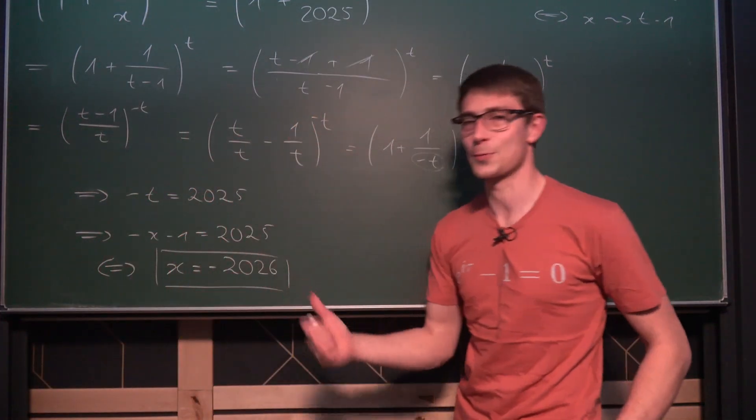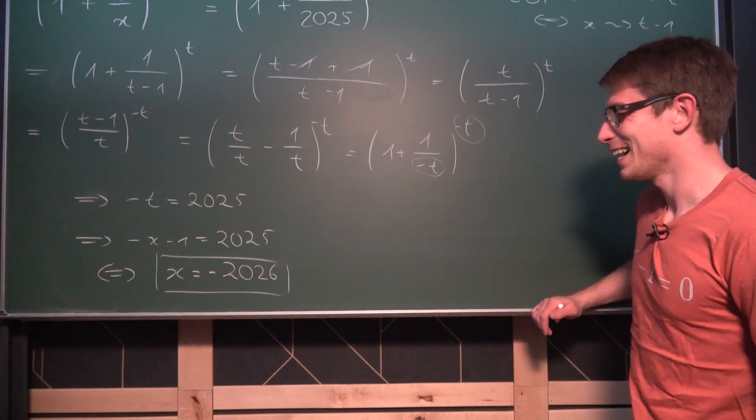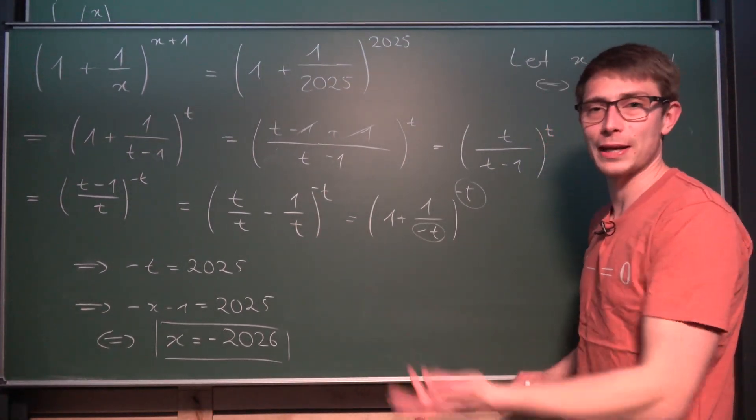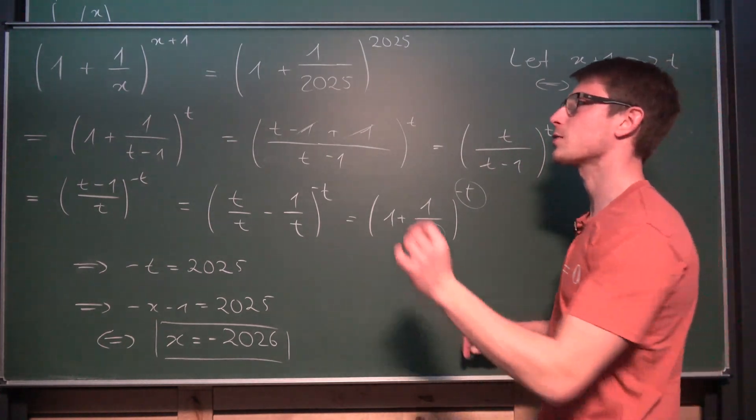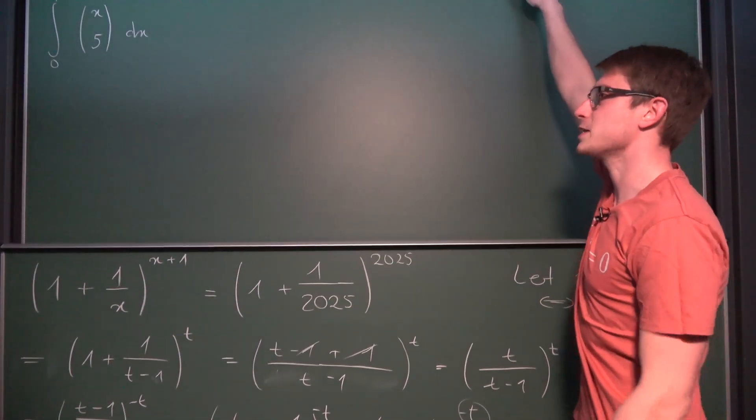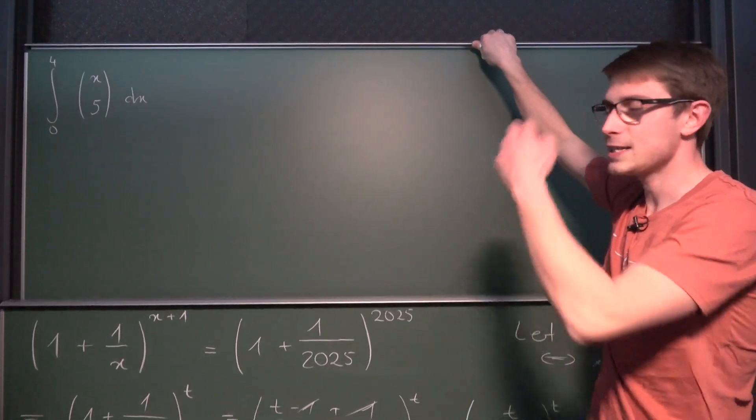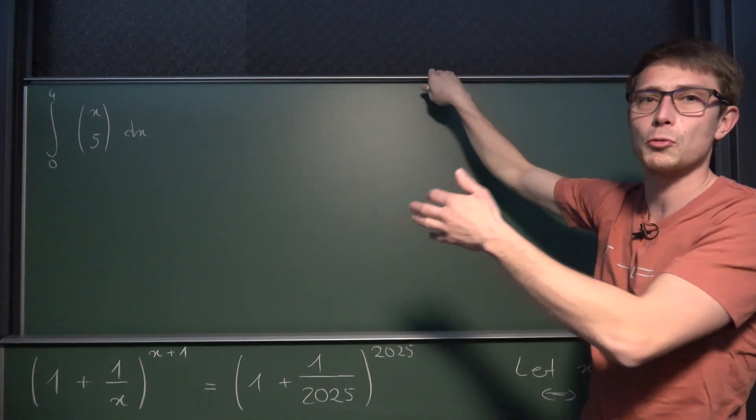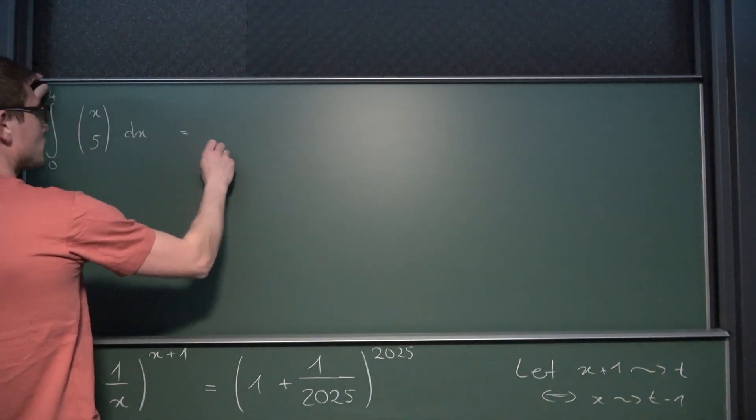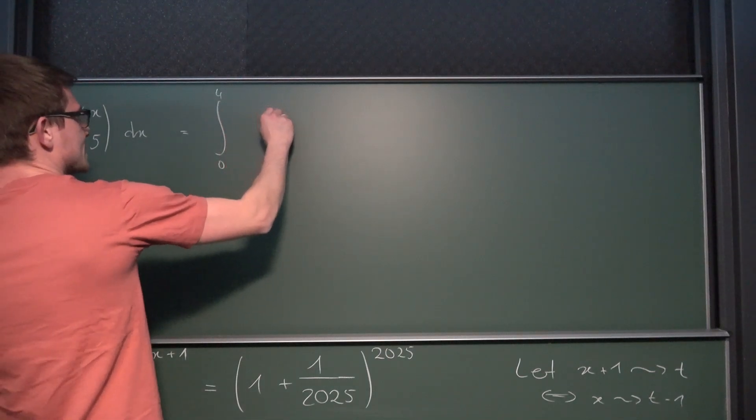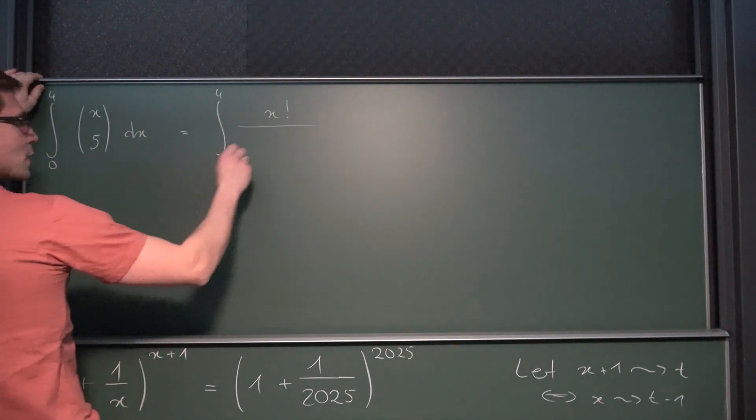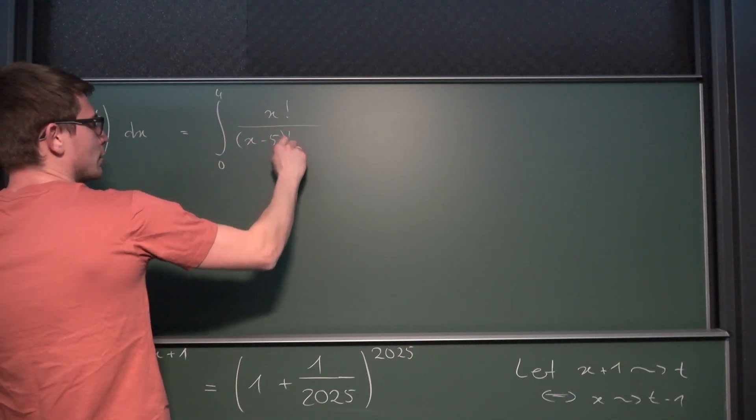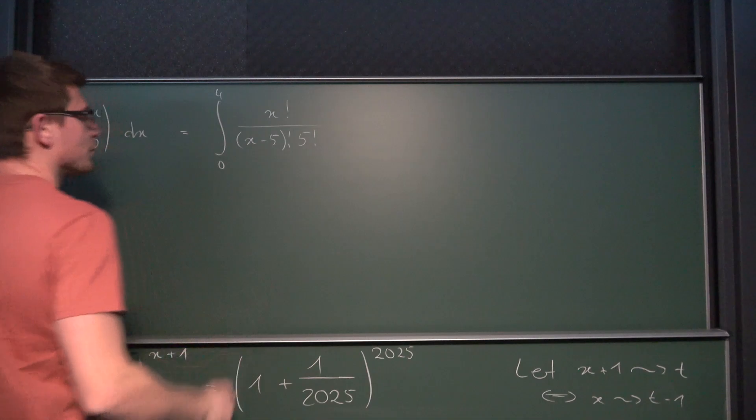Pretty satisfying right? This takes us right to the next year. I really like this problem, it's just simple algebra but it's a little bit of a brain teaser. I hope you enjoyed the first problem. Now we have the integral from 0 to 4 of x choose 5 integrate with respect to x. The first thing we could do is write out what x choose 5 actually is. By definition this is x factorial divided by x minus 5 factorial times 5 factorial, all of this integrated with respect to x.